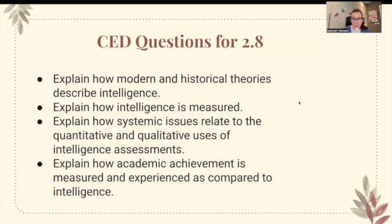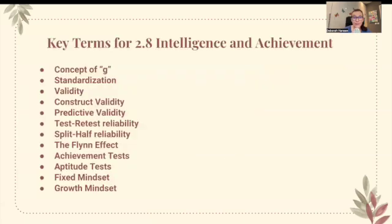The first CED question was: explain how modern and historical theories describe intelligence. The second: explain how intelligence is measured. The third: explain how systemic issues relate to the quantitative and qualitative uses of intelligence assessments. And the last one: explain how academic achievement is measured and experienced as compared to intelligence. These are the key terms we're going to go through — the ones from the College Board CED that really stand out and are important for this unit.